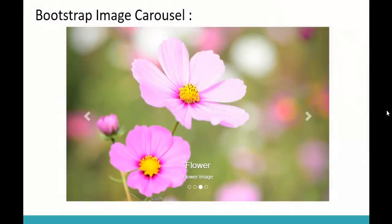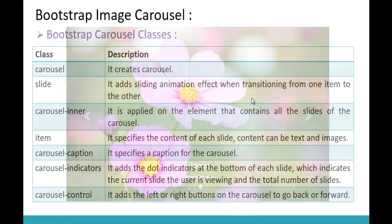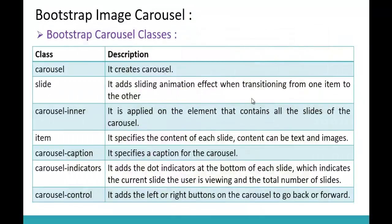This image represents the outcome of this session. At the end of this session we are going to build this type of image carousel which will have four images in it. In order to build this type of image carousel we need to use these Bootstrap carousel classes.